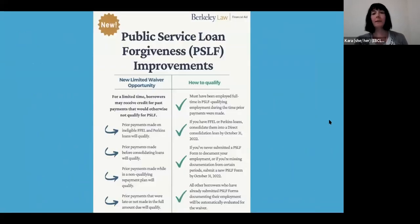So how do you qualify? You must have been employed full-time in a PSLF qualifying employment. You have FFEL or Perkins loans. Like I said, you must consolidate them into a direct consolidation loan by October 31st and apply for the waiver. If you've never submitted a PSLF form to document your employment, that's fine. You can do it now. Or if you're missing documentation from certain periods, we recommend submitting a new PSLF form before October 31st to trigger a review of your loans. The department is automatically reviewing people who are already enrolled in PSLF because they've previously submitted some PSLF form. But if you've never submitted one, then they're not going to review your account unless you submit a form. And all other borrowers who have already submitted PSLF forms will be automatically evaluated.